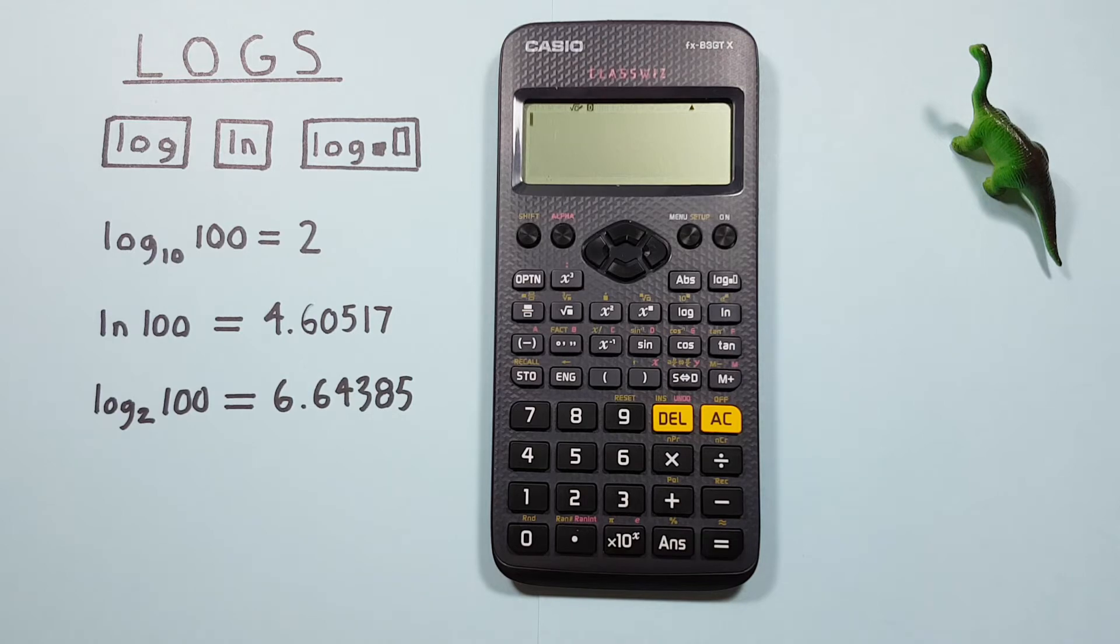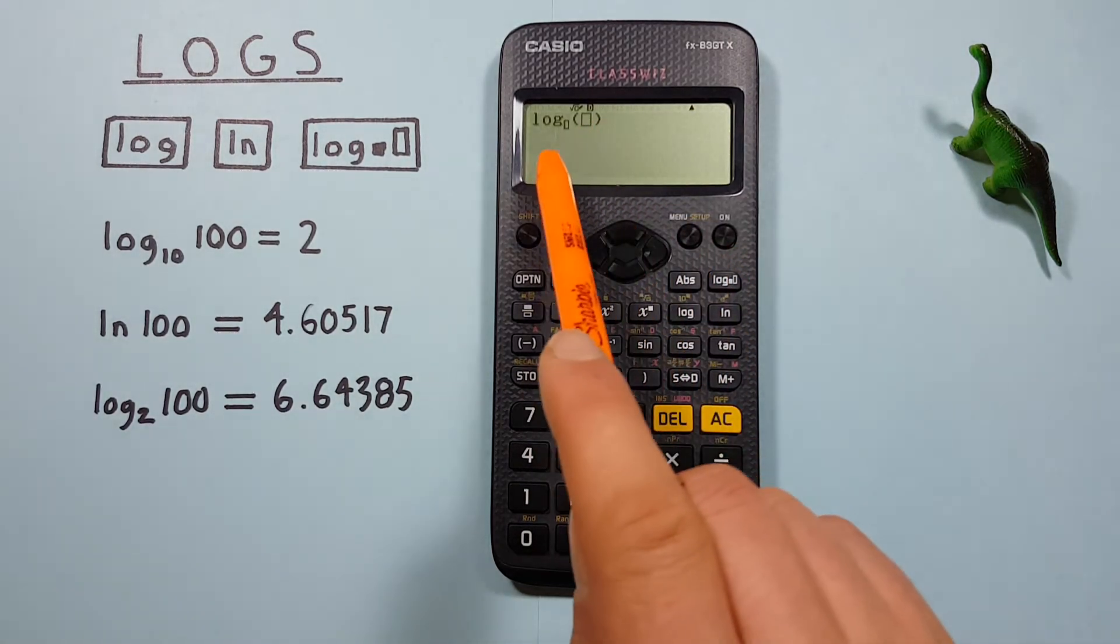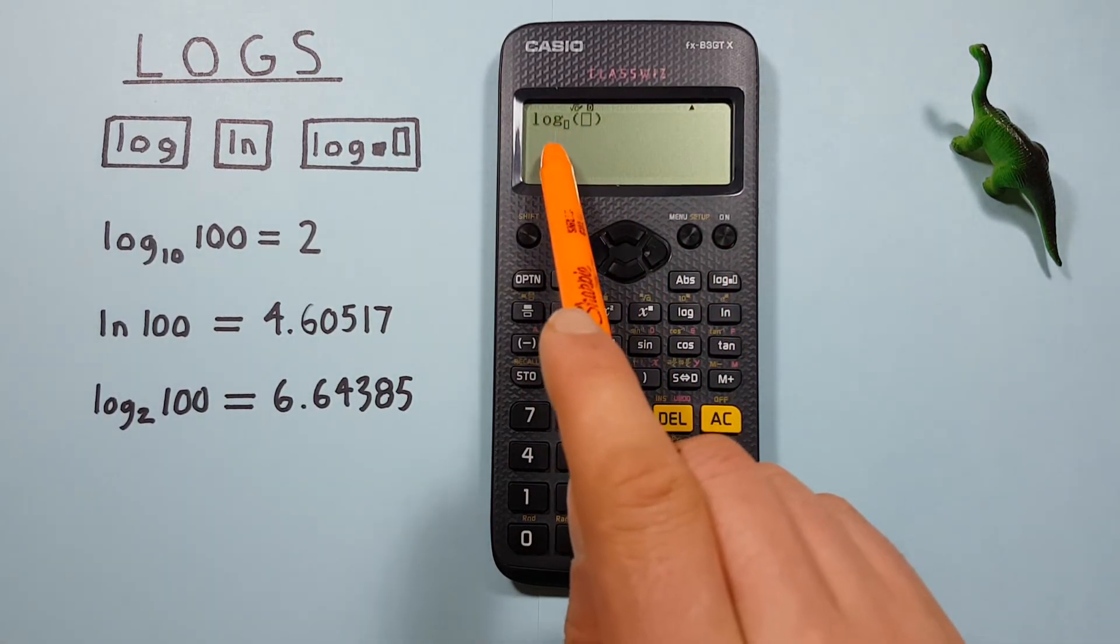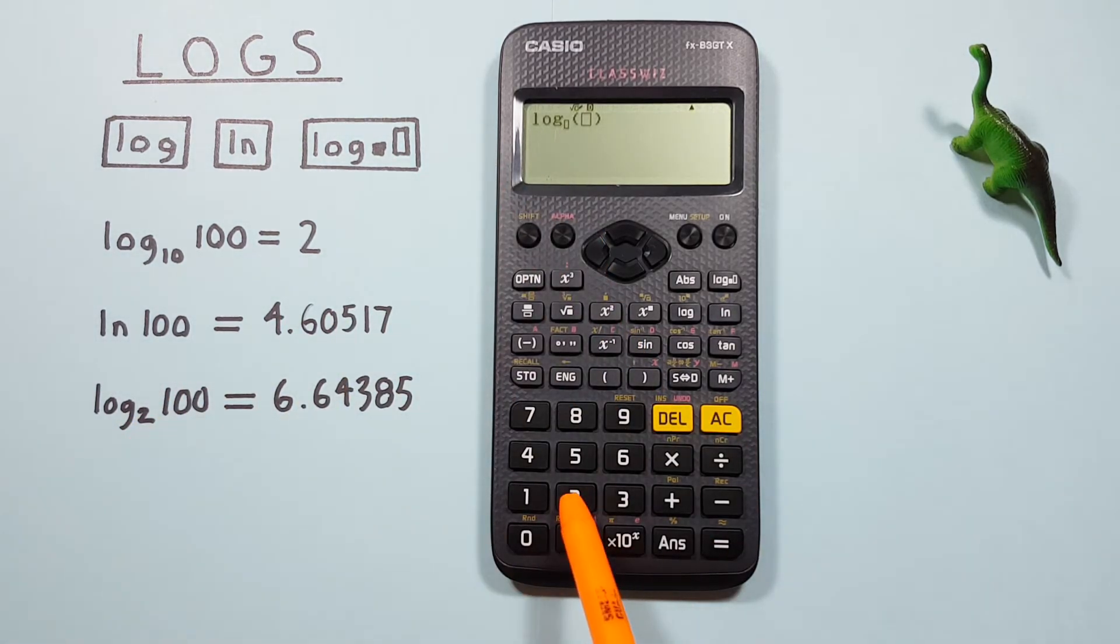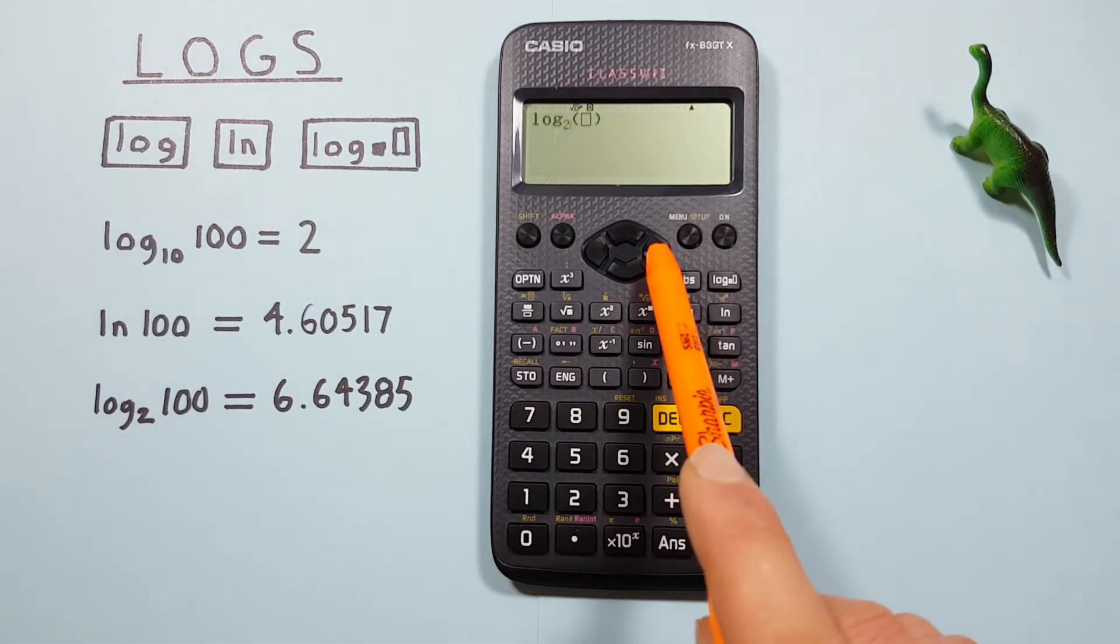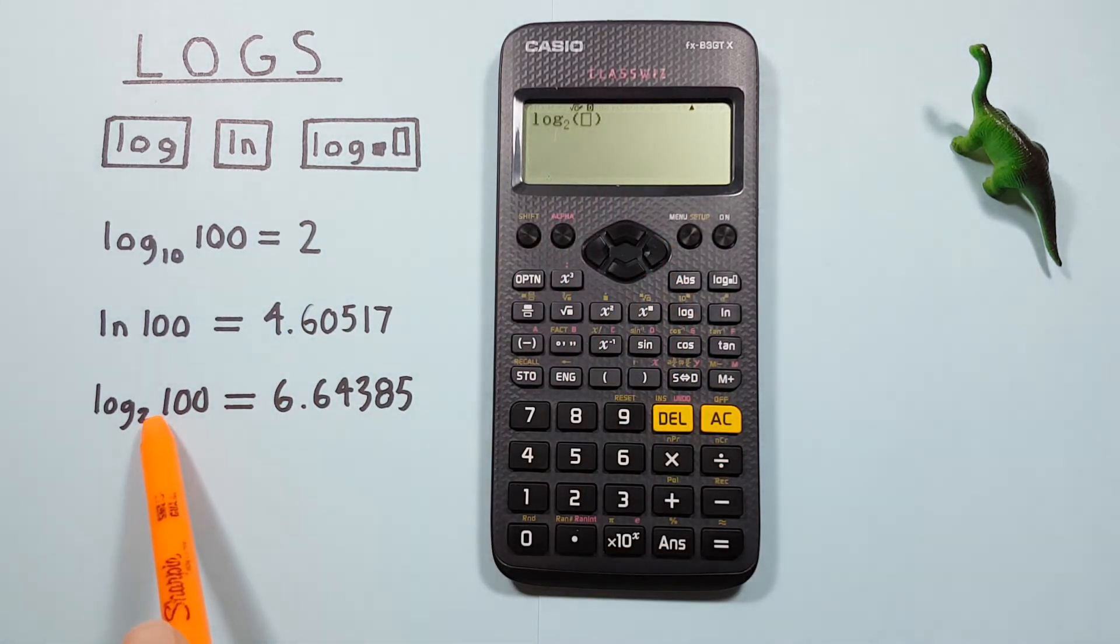For example, if we wanted to find log base 2 of 100, we would hit the log key with the base there, and we see we have two boxes now. The first box is where we enter our log base. So for this one, it was 2, and then we use the right arrow to move our cursor into the next box, which, for our example, is 100.